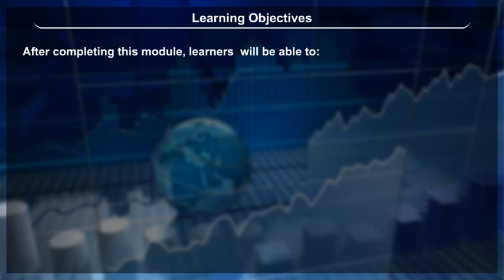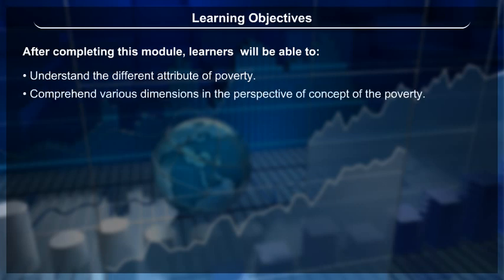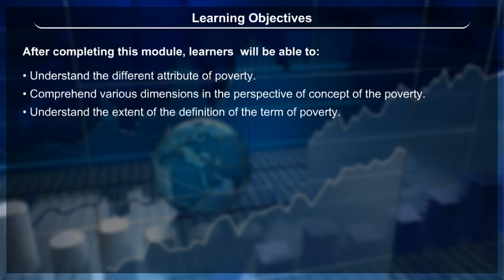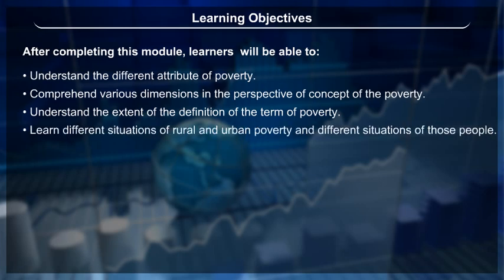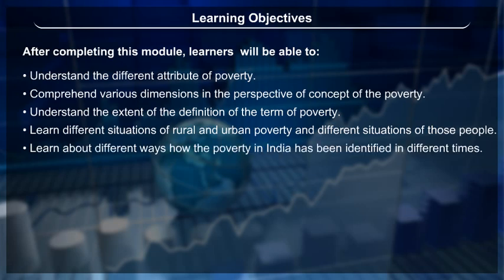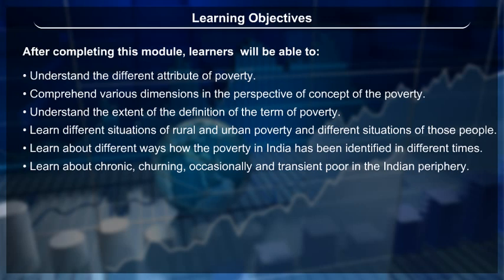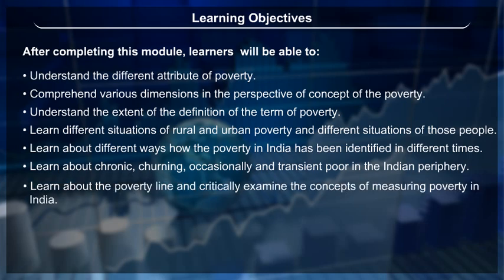Learning Objectives: After completing this module, learners will be able to understand the different attributes of poverty, comprehend various dimensions in the concept of poverty, understand the extent of the definition of the term poverty, learn different situations of rural and urban poverty, and learn about different ways how poverty in India has been identified in different times.